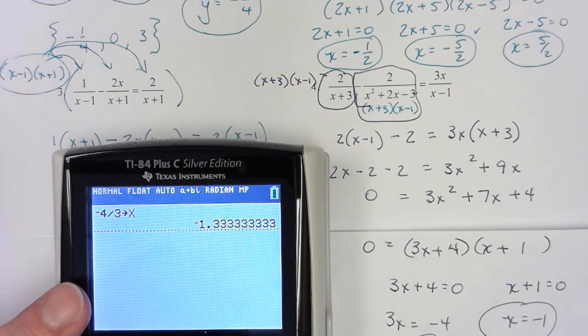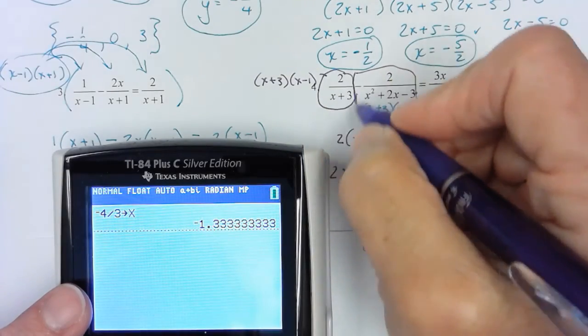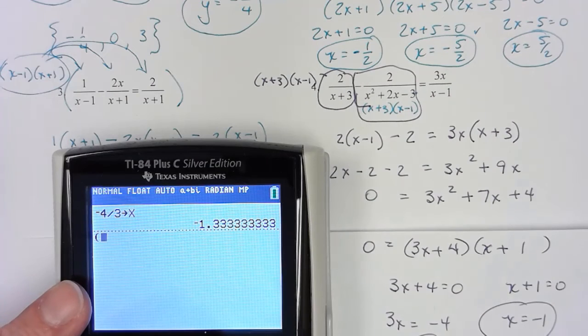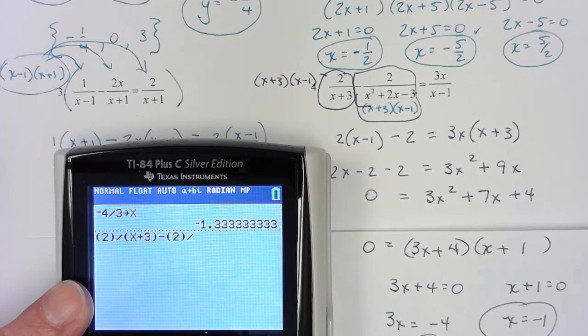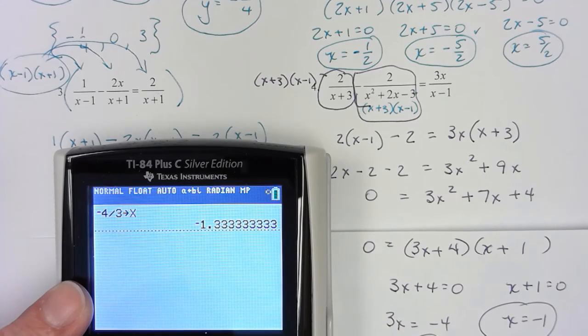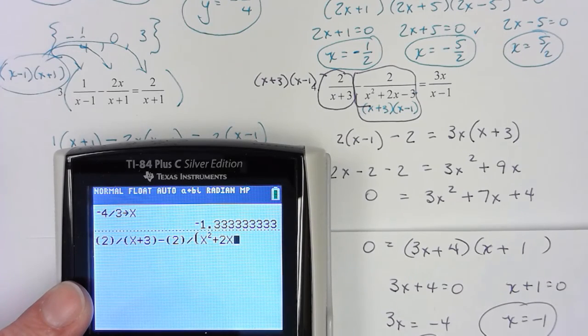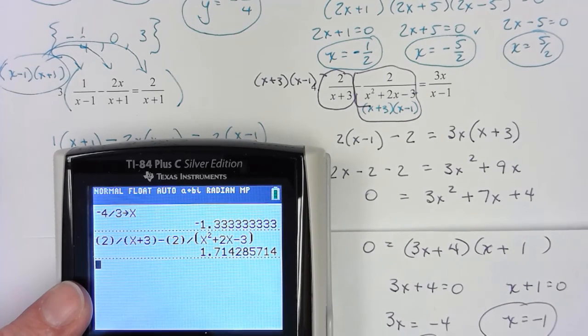So if you're dealing with fractions, it's to your advantage to put numerator in parentheses, denominator in parentheses. So parentheses 2 divided by parentheses x plus 3 minus parentheses 2 divided by x squared plus 2x minus 3. And let's see what we get on the left hand side. We get that.